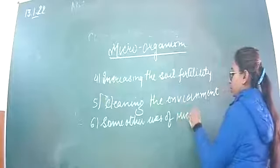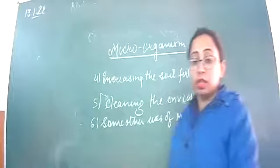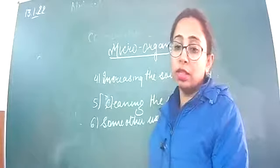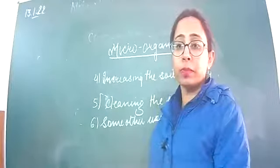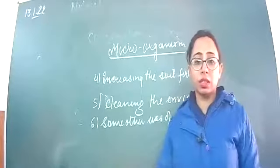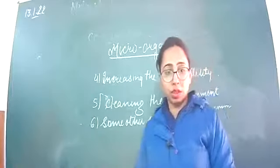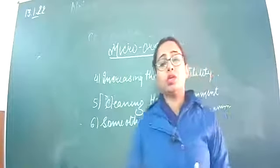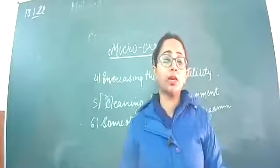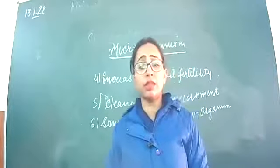Some other uses of microorganisms include tanning of leather. Tanning is the hardening of leather. Leather is formed from animal skin, which is very soft. Some bacteria help convert animal skin into leather by hardening it. So some microorganisms such as bacteria help in the tanning of animal skin, that is, converting it into leather and making it hard.